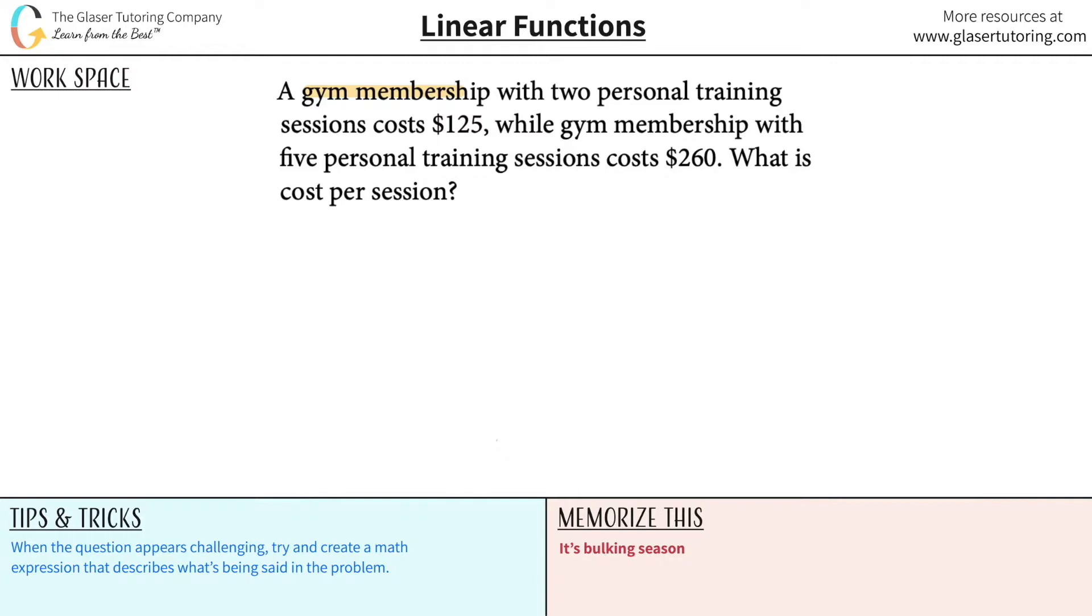A gym membership with two personal training sessions costs $125, while gym membership with five personal training sessions costs $260. What is the cost per training session, basically?